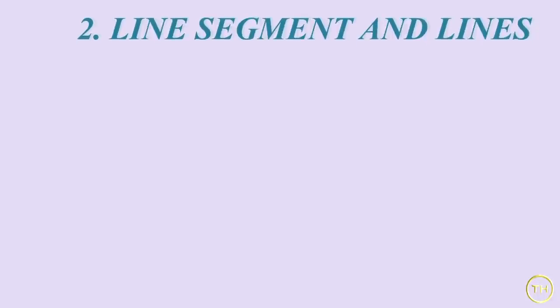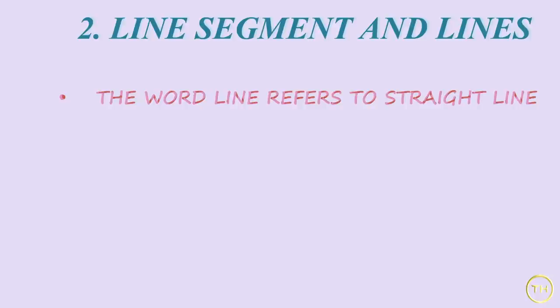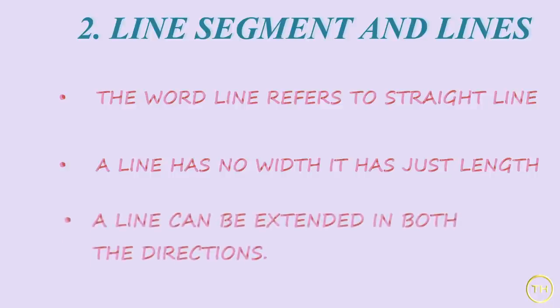Next, we are going to learn about line segments and lines. The word line refers to straight line. A line has no width, it has just length. A line can be extended in both directions.